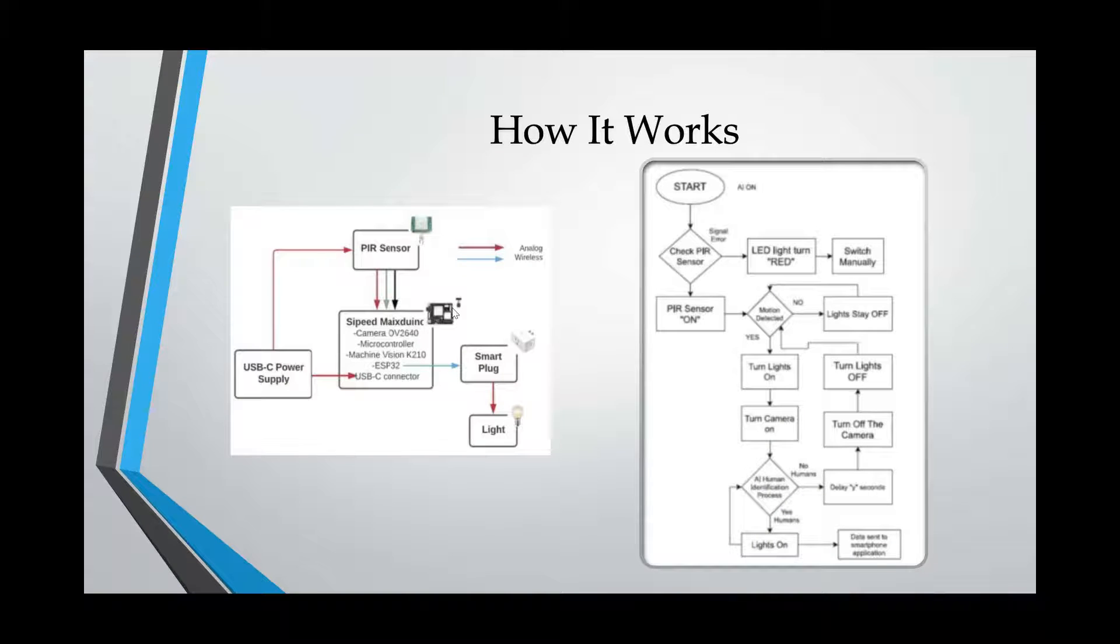So here are our block diagrams. On the left is our hardware block diagram. The main part is right there in the middle, the Max Duino. And it comes with a camera and an AI module, which is the K210 that we just talked about. And a Wi-Fi module, which is the ESP32. And on top of that, there's the PIR sensor, which would send a signal whenever it senses motion to the Max Duino to turn on the camera and turn on the AI module. And then from there, the ESP32 would send a signal through Wi-Fi to a smart plug or any smart device to turn on the light.